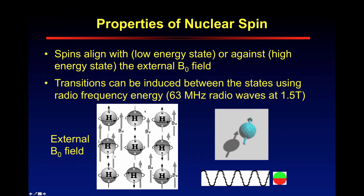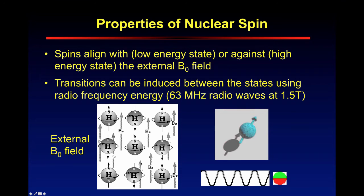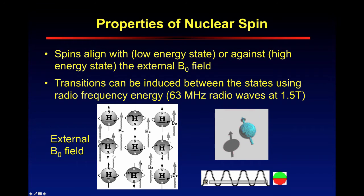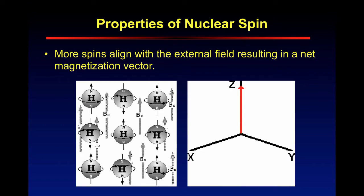All of these spins are magnetic moments. The transitions can be induced between the two states using radiofrequency energy. By applying radiofrequency, you can change the states of these. A large proportion of these protons are going to align with the magnetic field; however, there will be some that will align against the magnetic field. As these things precess — rotating around their axis — they actually produce a signal that can be detected. Let's see how this works.